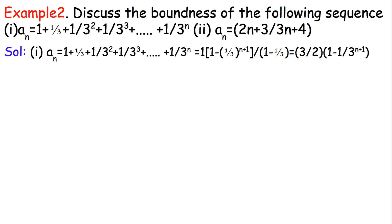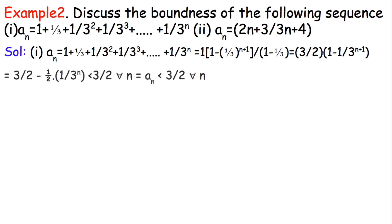In the denominator we get 2/3, and taking its reciprocal gives 3/2. So we get (3/2) × (1 − (1/3)^(N+1)), which expands to 3/2 minus (1/2) × (1/3)^N.